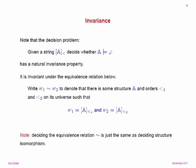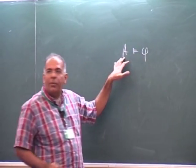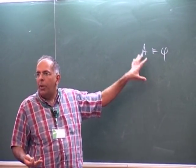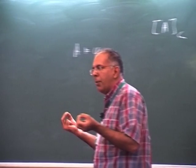The exact string obtained depends on the choice of order; different orderings of the same universe give different strings encoding the same structure. But the set of strings encoding models of a particular first-order sentence has a natural invariance property: if two strings are encodings of the same structure under different orderings, then they're both in this language or both out, since whether A satisfies phi is a property of the structure A and doesn't depend on the encoding.